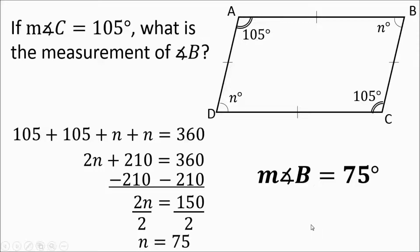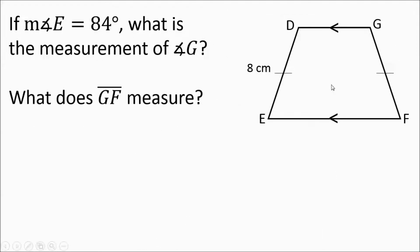Moving on to a new quadrilateral. If the measurement of angle E equals 84 degrees, what is the measurement of angle G, and what does GF measure? I can see one pair of parallel sides and two sides the same — this is an isosceles trapezoid. So this angle is also 84 degrees, and the remaining two angles are the same as each other because they're consecutive — next to each other.